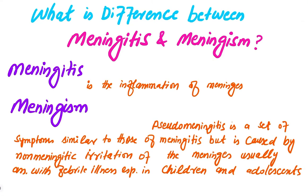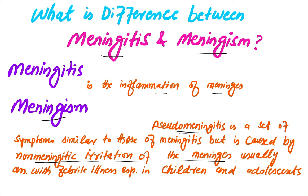What is the difference between meningitis and meningism? Meningitis is the inflammation of the meninges — that is, inflammation of the dura mater, arachnoid mater, and pia mater. Meningism, or pseudo-meningitis, is a set of symptoms similar to those of meningitis but caused by non-meningitic irritation of the meninges, usually associated with febrile illness, especially in children and adolescents.